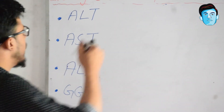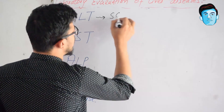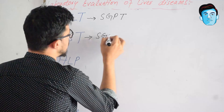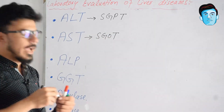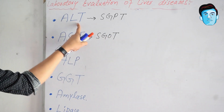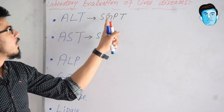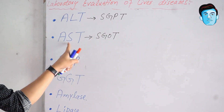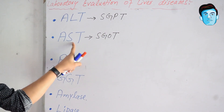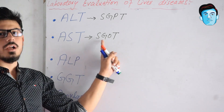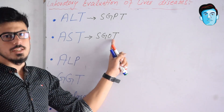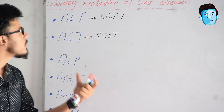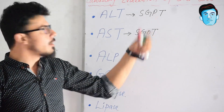ALT is also called SGPT and AST is also called SGOT. ALT stands for alanine transaminases, also called serum glutamate pyruvate transaminases, while AST stands for aspartate transaminases, also called serum glutamic oxaloacetic transaminases. Nowadays we mostly use the term ALT instead of SGPT.